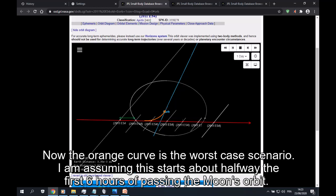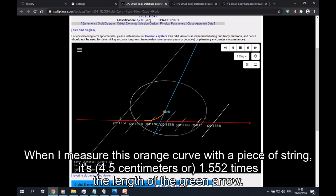But anyway ES4 travels the length of that green arrow in 6 hours time. Now the orange curve is the worst case scenario. I am assuming this starts about halfway the first 6 hours of passing the Moon's orbit. When I measure this orange curve with a piece of string, it's 4.5 cm or 1.552 times the length of the green arrow.